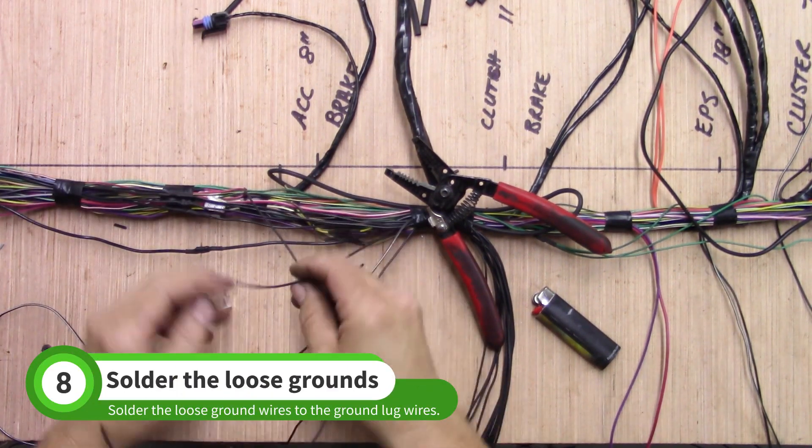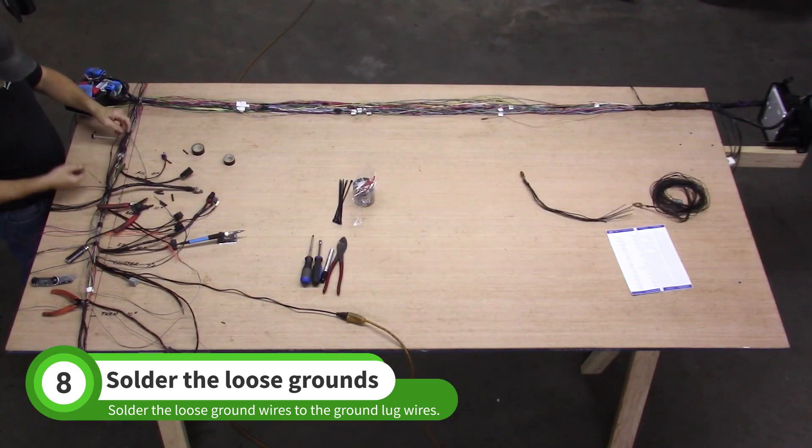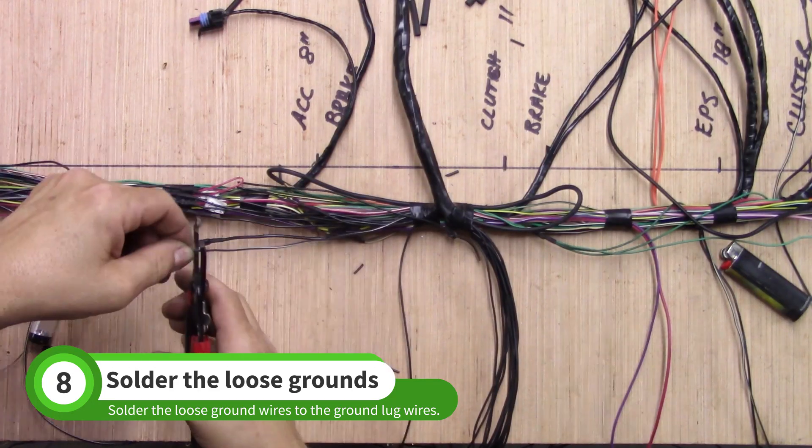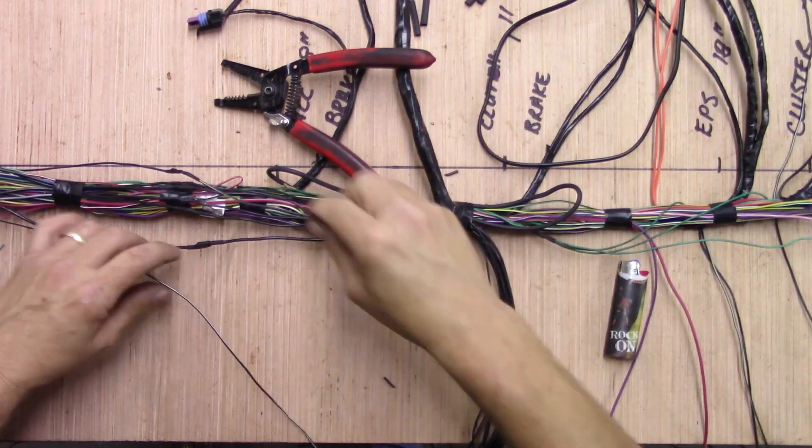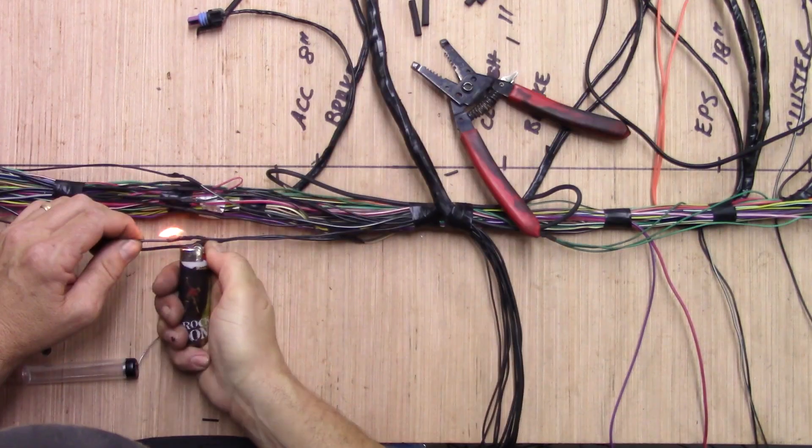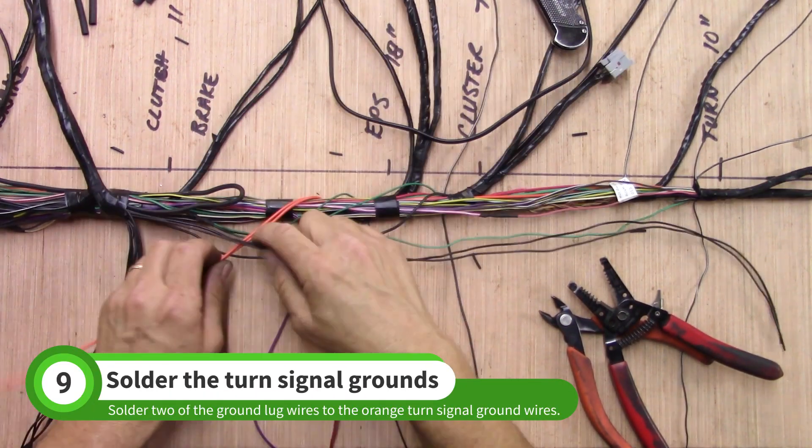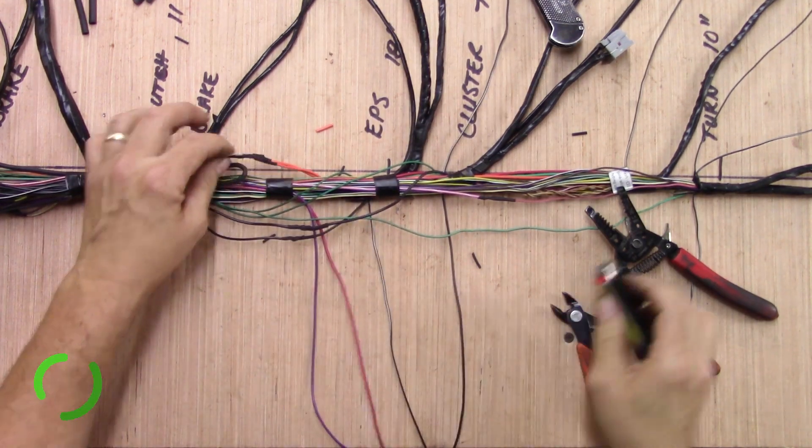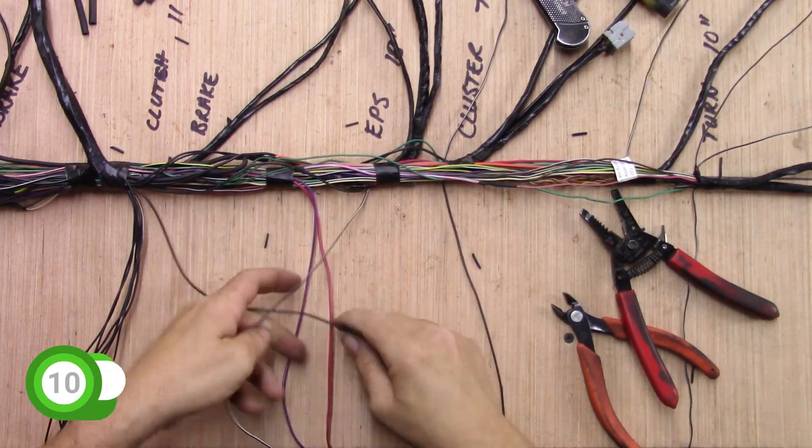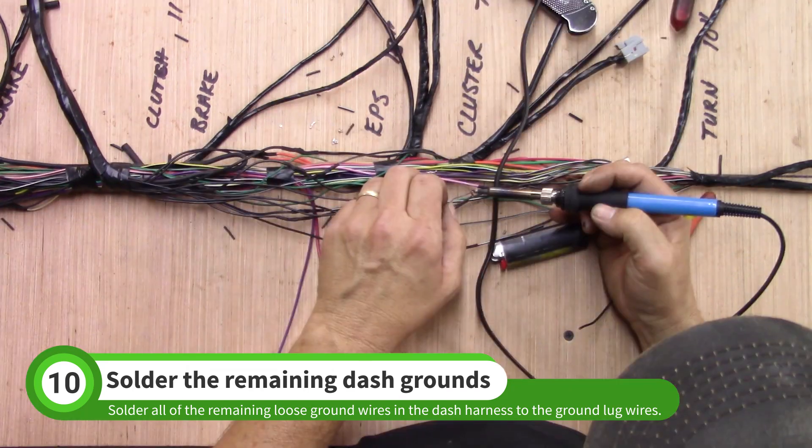Solder the loose ground wire near the clutch and brake mark to one of the ground lug wires. Do the same for the remaining loose grounds near the BCM. Solder the two orange turn signal wires to two of the ground lug wires. Repeat this process for the remaining dash harness grounds. The total number of grounds will vary depending on your donor year and trim.